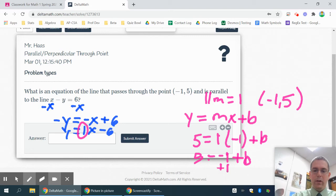And that's going to give you 5 equals negative 1 plus b. And then to get rid of the negative 1, add 1 to both sides. So I end up finding out that 6 is b, or my y-intercept.